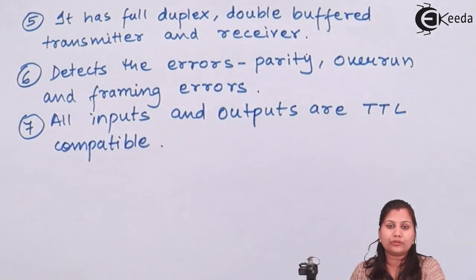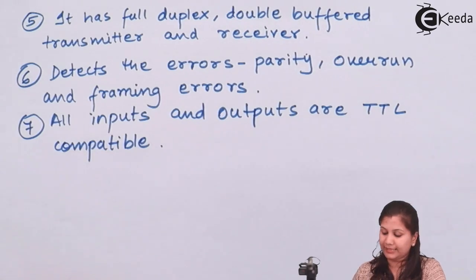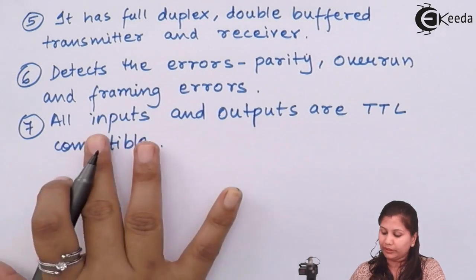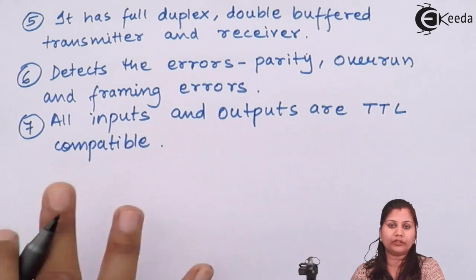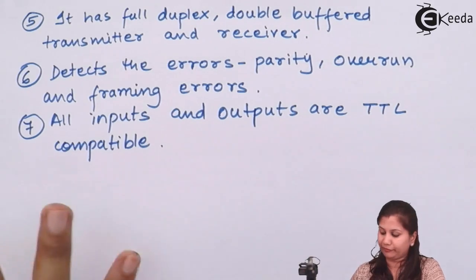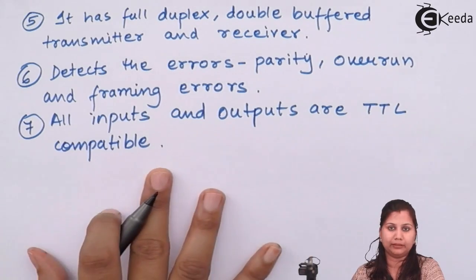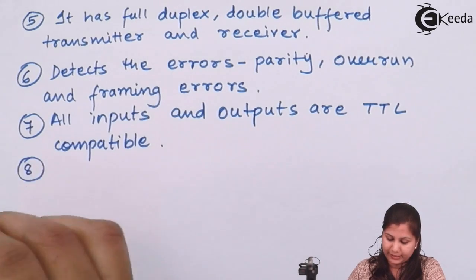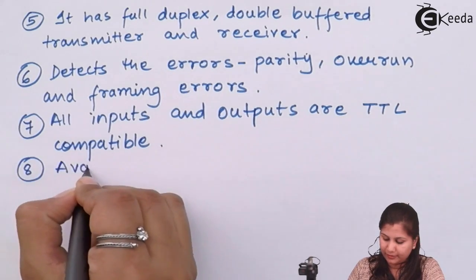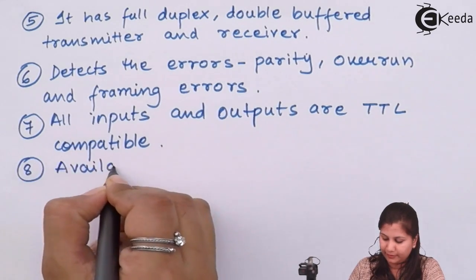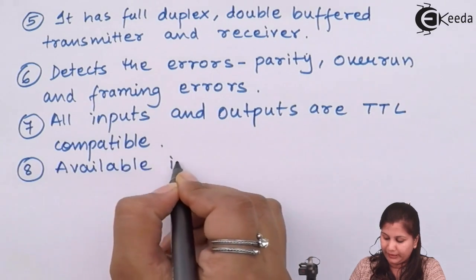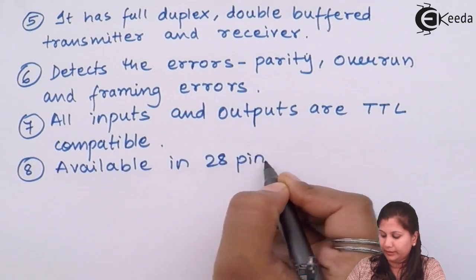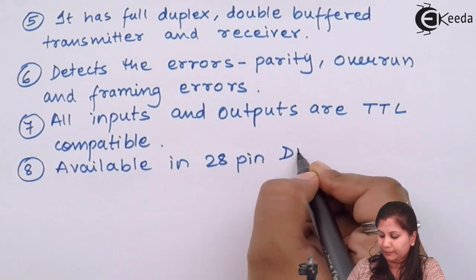The 8251 IC has input and output pins, and all these pins are TTL compatible. It is also available in a 28-pin DIP package.